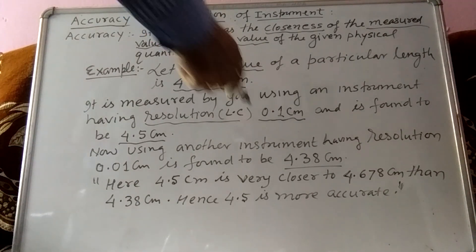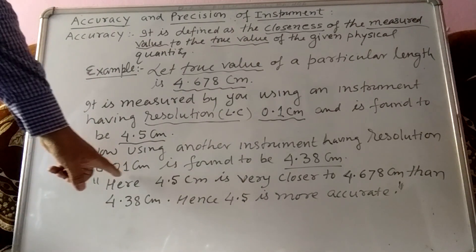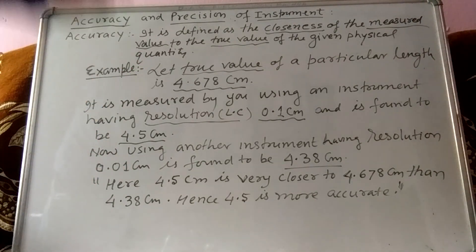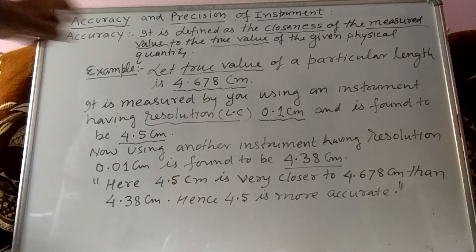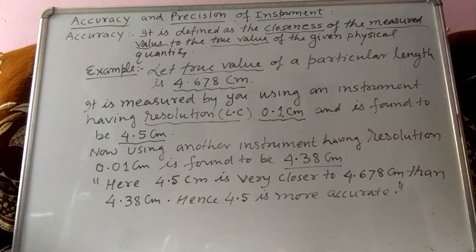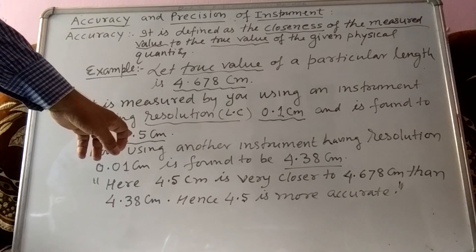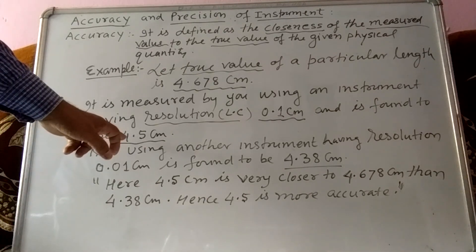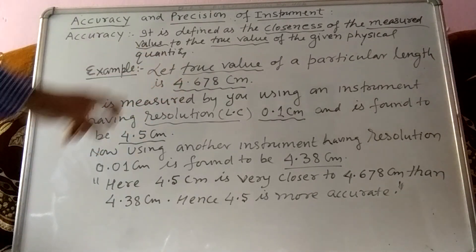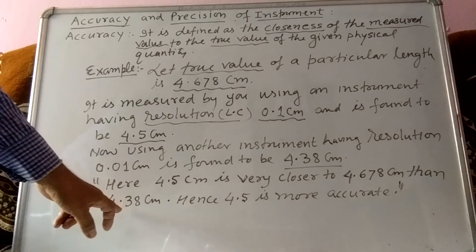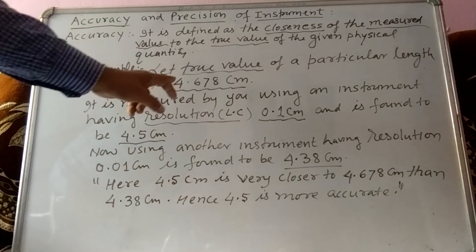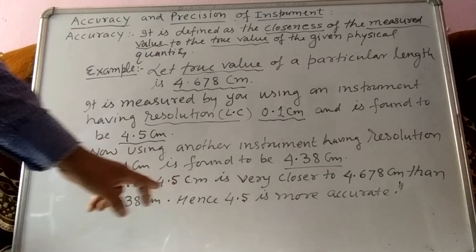So the length is measured by the same person using two instruments and the values come out different. Now which one is more accurate? You can see that 4.5 centimeter is closer to 4.678 centimeter than 4.38 centimeter. The difference between 4.67 and 4.38 is larger, while the difference between 4.67 and 4.5 is smaller.